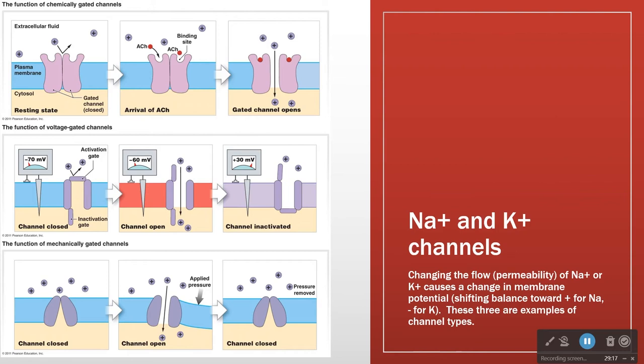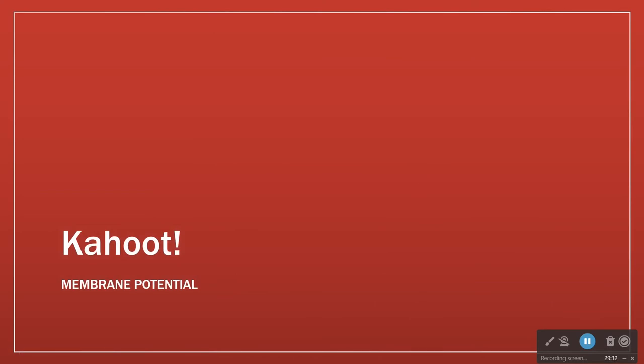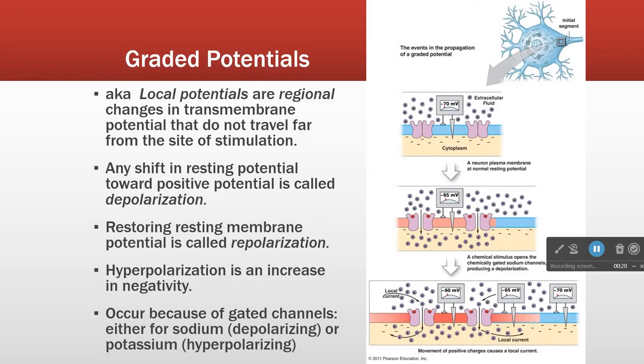So these changes in membrane potential really explain how the body responds to the external environment as well. I start with membrane potential and action potential because it's the primary way the body conveys information from one place to another — how the membrane builds up a charge.